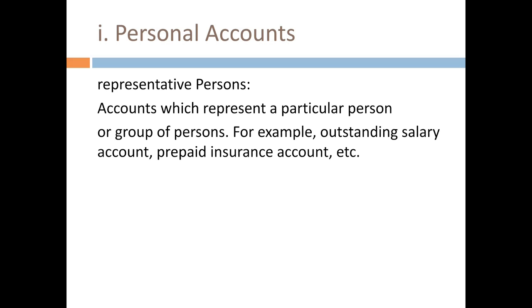For example, if we earn a salary in this year but it has not yet been paid, we call that outstanding salary. If we have a personal account, it will be a personal account for a person. Outstanding salary is treated as a personal account because it represents the person who will receive that salary.